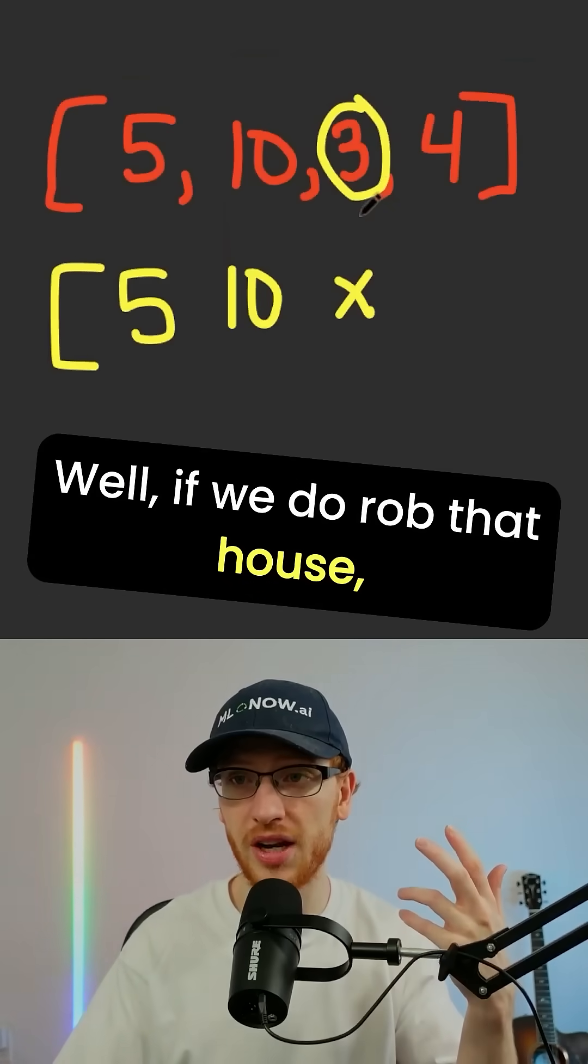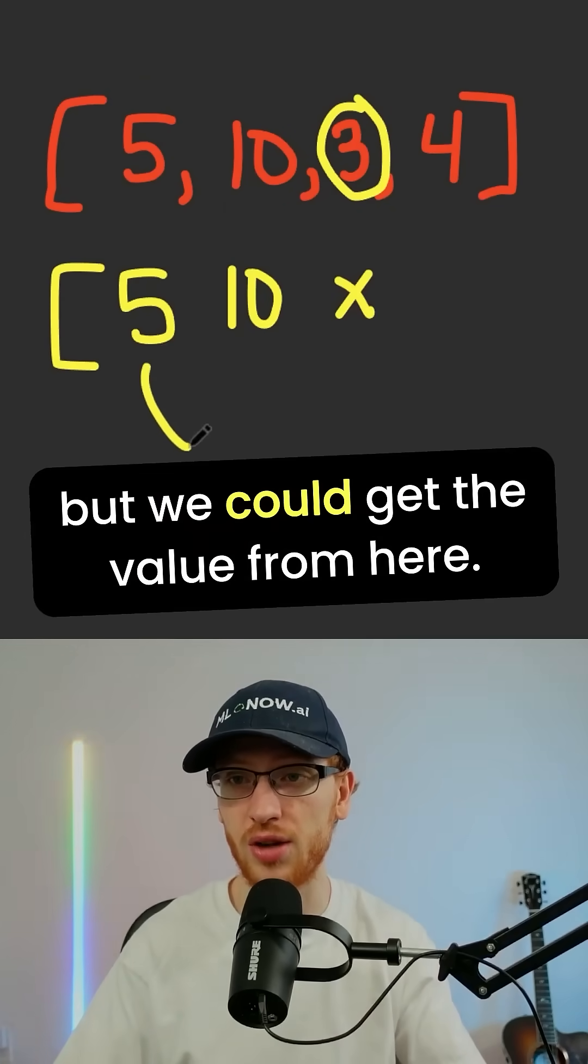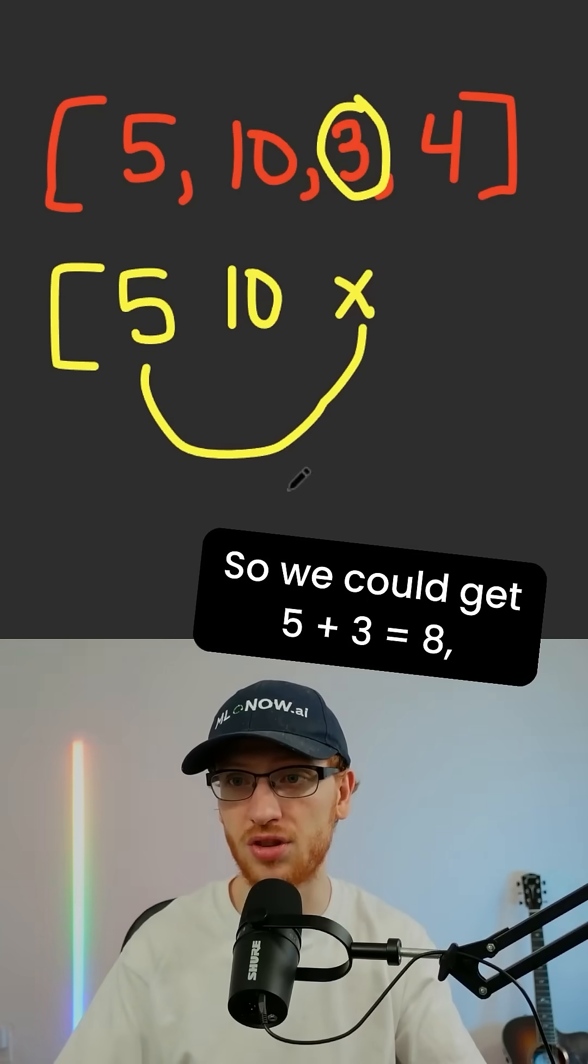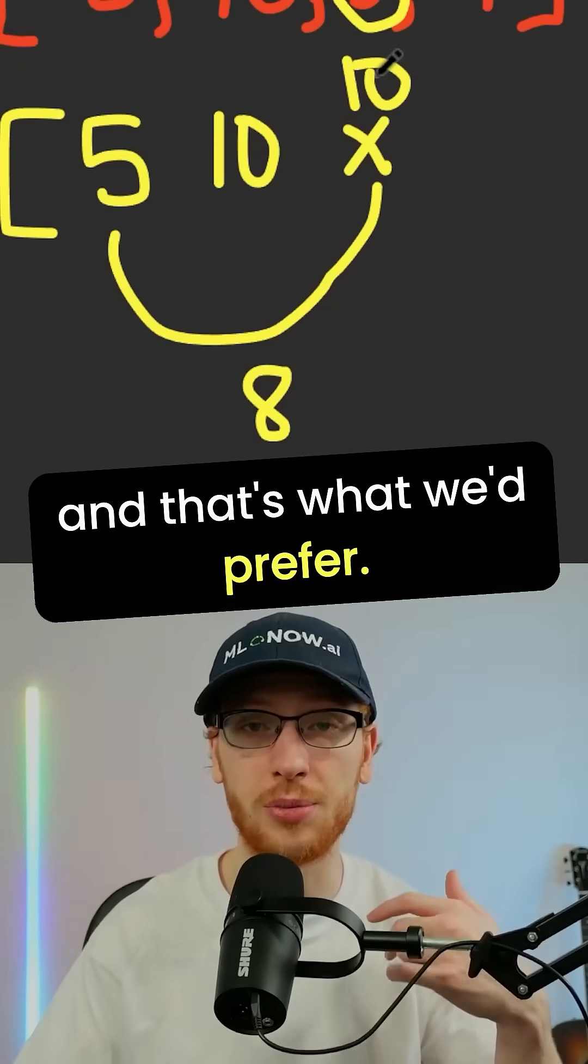Well, if we do rob that house, we can't get the value from this because that would trigger the alarms, but we could get the value from here. So we could get 5 plus 3 equals 8, or we could just keep what we had and not rob it, which is 10, and that's what we'd prefer.